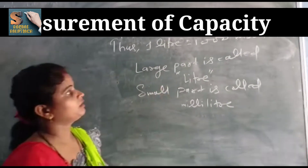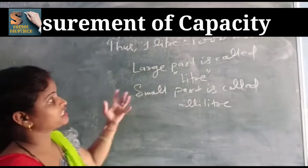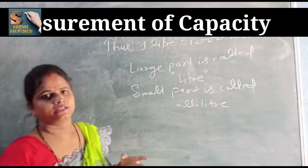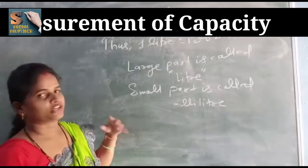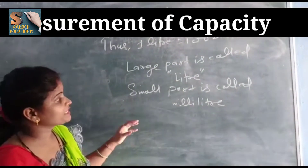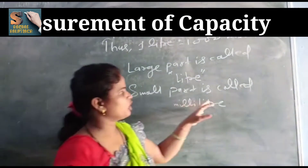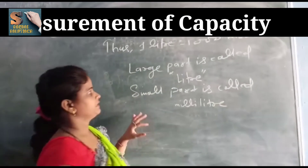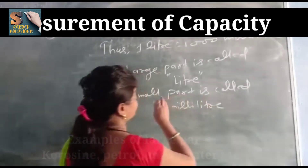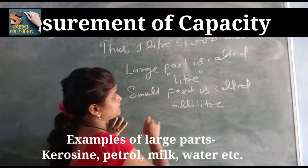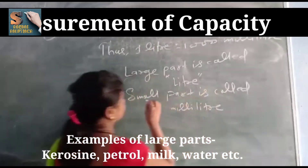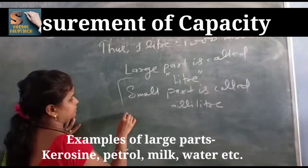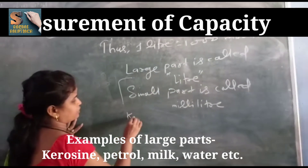Some examples of large quantities measured in litres: kerosene, oil, petrol. Some examples of small quantities measured in millilitres: medicine.